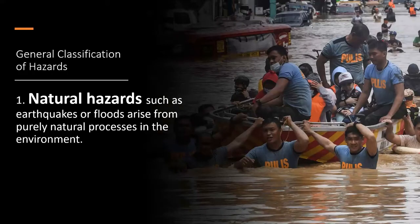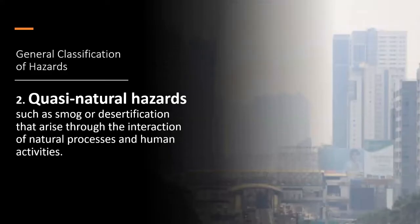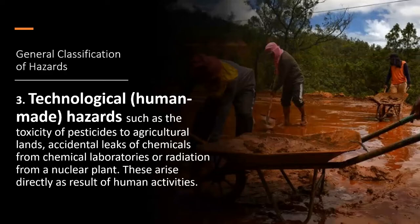Natural hazards such as earthquakes or floods arise from purely natural processes in the environment. Quasi-natural hazards such as smog or desertification arise through the interaction of natural processes and human activities. Technological or human-made hazards such as the toxicity of pesticides to agricultural lands, accidental leaks of chemicals from chemical laboratories, or radiation from a nuclear plant arise directly as a result of human activities.